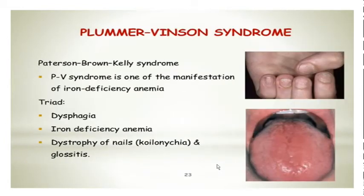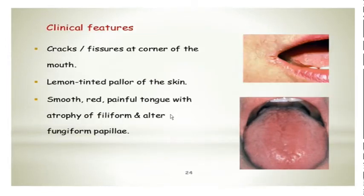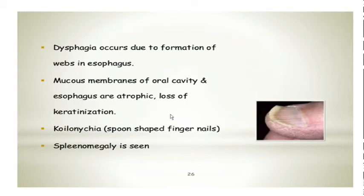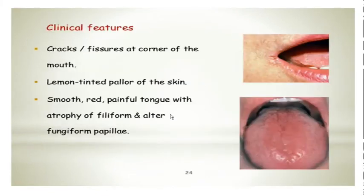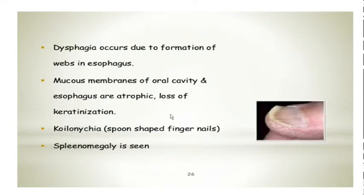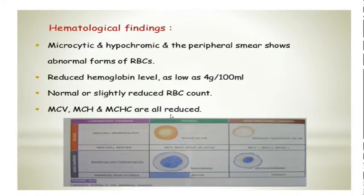One very important and interesting symptom is the Plummer-Vinson syndrome, which is also called Patterson-Brown-Kelly syndrome. This is another manifestation of iron deficiency where there is a triad: dysphagia, iron deficiency anemia, and dystrophy of the nails and glossitis. Dysphagia is basically because of the formation of webs in the esophagus. Other features include cracks and fissures at the corner of the mouth, a smooth red painful tongue, atrophy of the filiform and fungiform papillae. The mucous membrane of the oral mucosa and esophagus are atrophic with loss of keratinization. Koilonychia may be present and splenomegaly is seen.